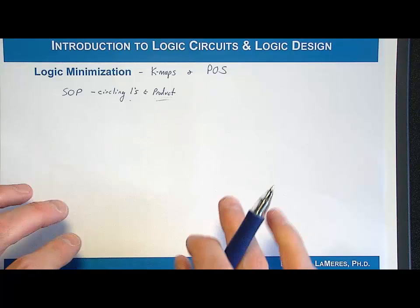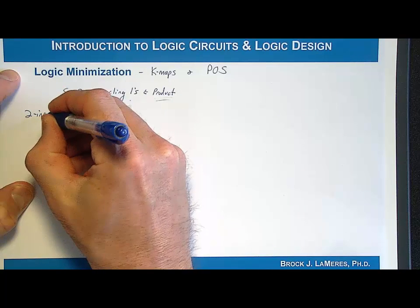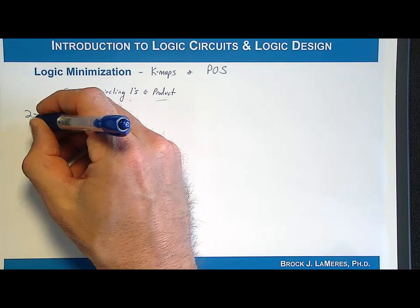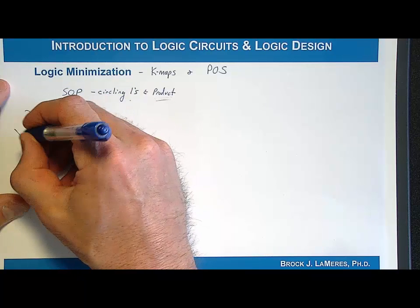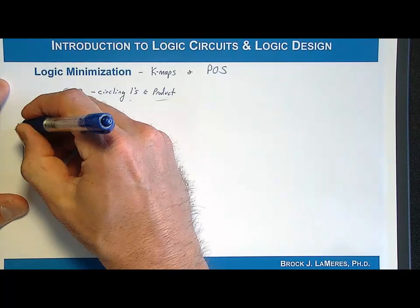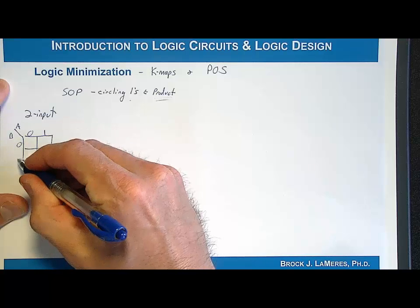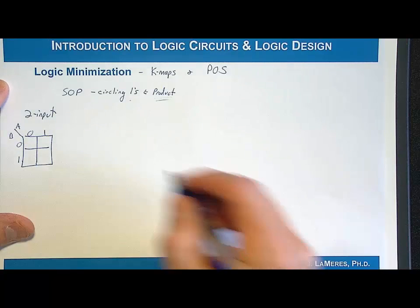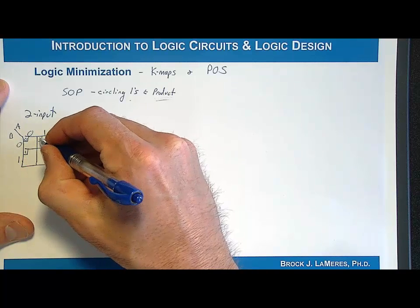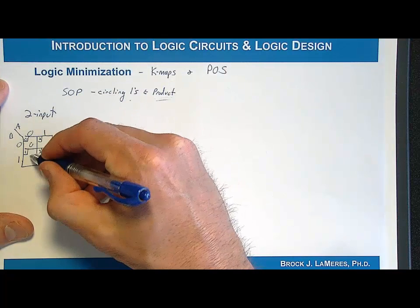Let's take a look at how we might do that with a two-input example. We have a two-input K-map with inputs called A and B, with input codes 0 and 1 along the sides, giving us cell 0, cell 1, cell 2, and cell 3. We'll say the outputs are 0, 1, 0, 1.